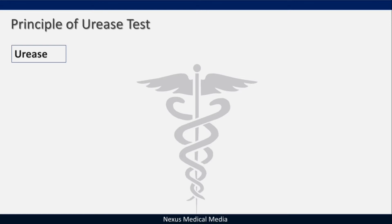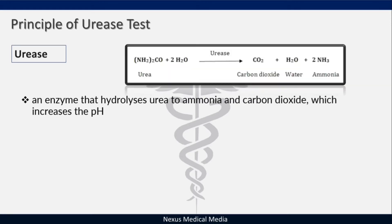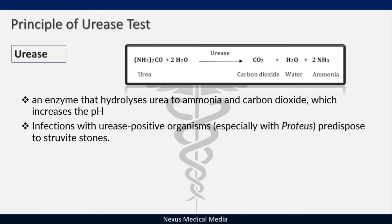Urease is an enzyme that hydrolyzes urea to ammonia and carbon dioxide, which increases the pH and creates an alkaline environment — a pH more than 7.